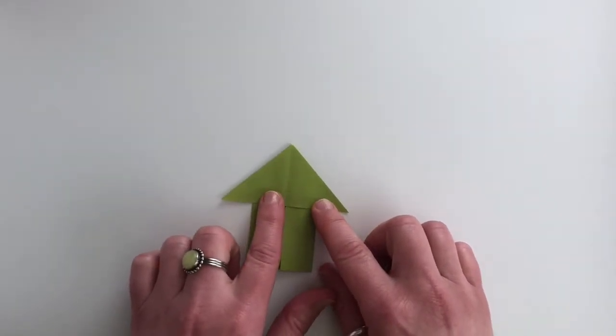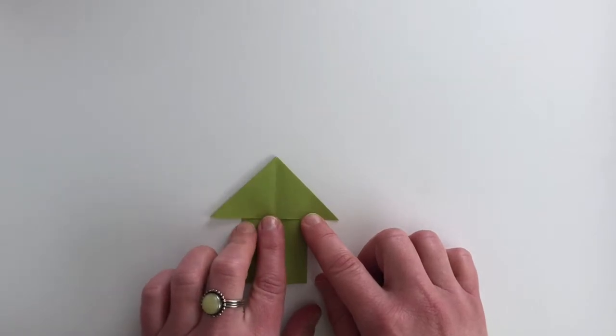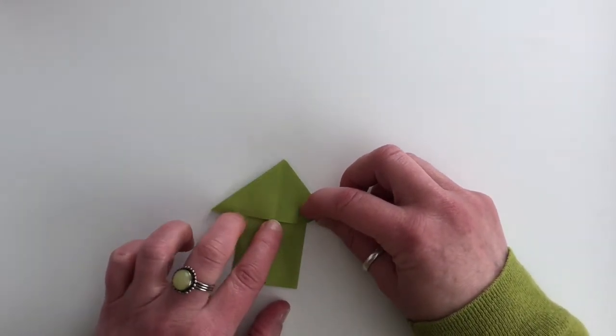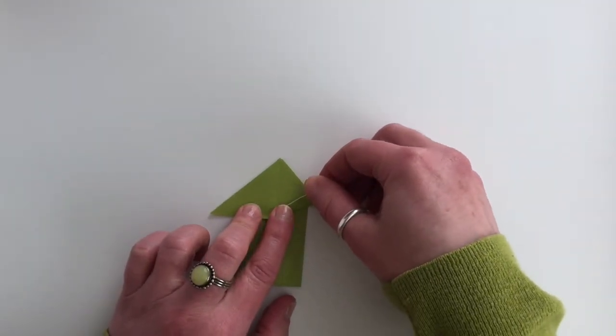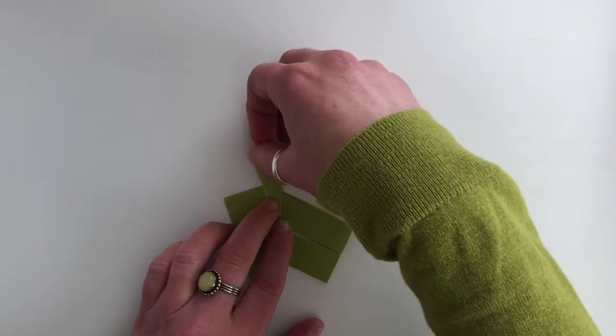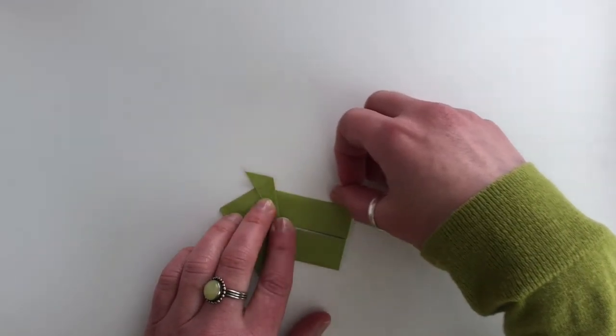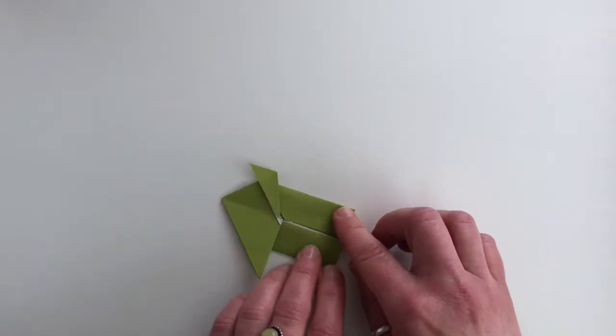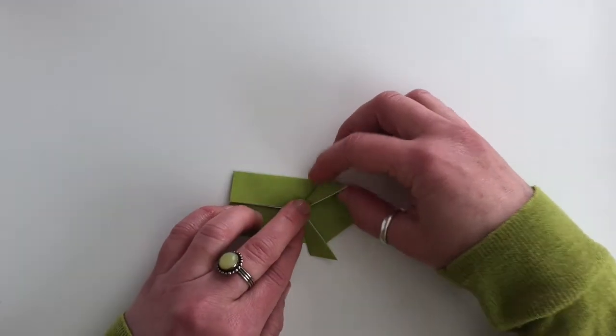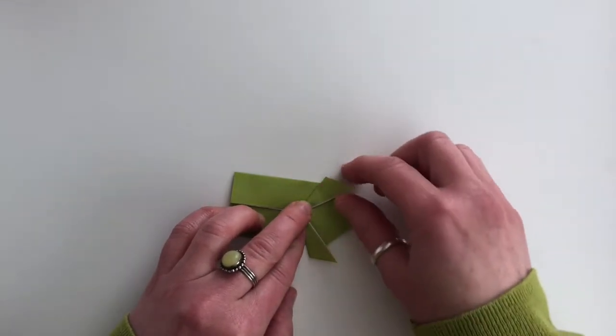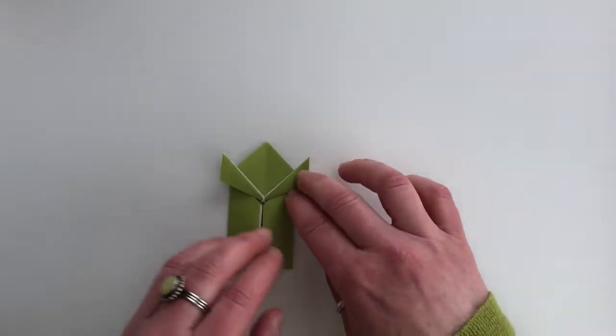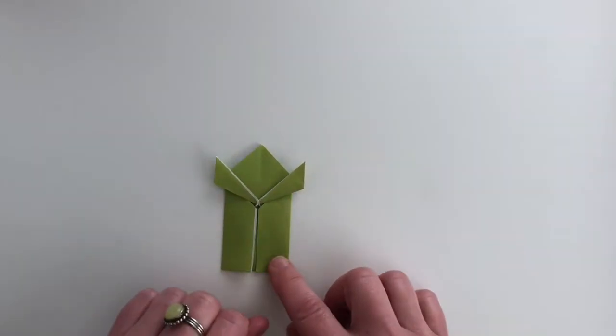So now we have the head of our frog. We're going to make his front legs. We're going to take this point and from here make a triangle. You'll know the shape of your triangle is correct when this edge aligns with this edge and they're parallel. We're going to repeat the same thing on the other side. So now we've made the front legs of our frog.